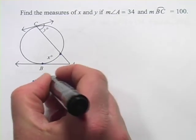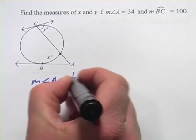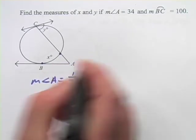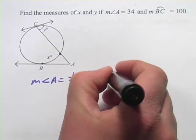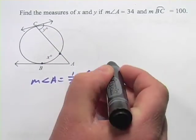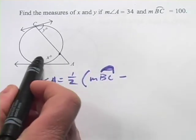So in this case, the measure of angle A would be one half of the big arc minus the little arc. The big arc is BC, so arc BC minus this one, x.